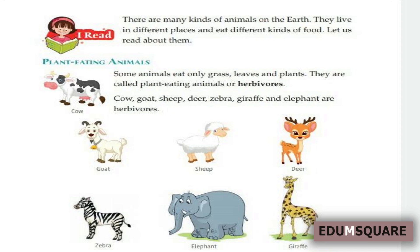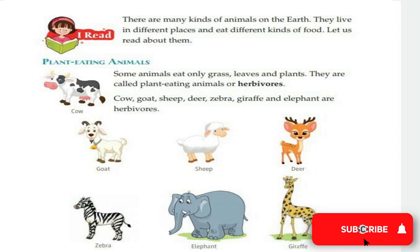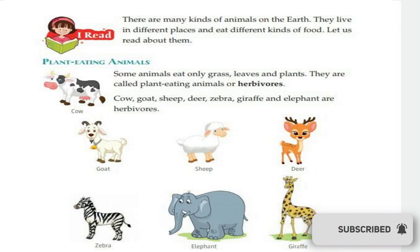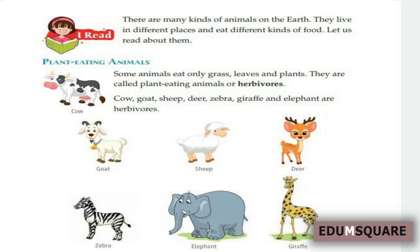As the name indicates, plant-eating animals eat only grass and plants. The animals that eat only plants are known as herbivores. Examples are cow, goat, sheep, deer, zebra, giraffe and elephants. These animals are herbivores — they eat only plants.